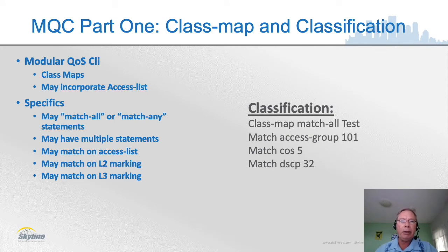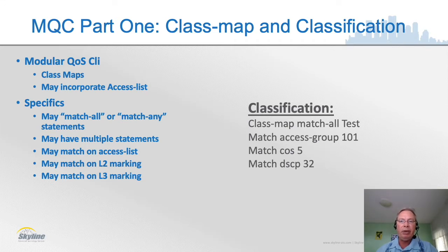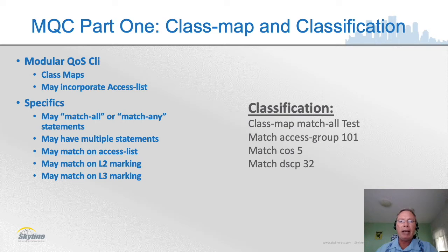The way we implement QoS in a Cisco environment is by using a thing called the Modular Quality of Service Command Line Interface, or the MQC. We do that first by identifying various types of traffic with a thing called a class map. A class map has a case-sensitive name and then one or more match statements. The statement between 'class-map' and the name can say 'match-all' or 'match-any.' If you say match-all, traffic must match all of the criteria stated.